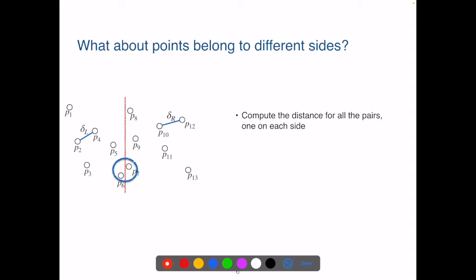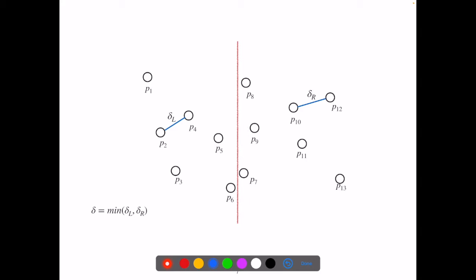If we simply compute all the distances between points on the left and points on the right, we are back with O of n-square complexity. Do we really have to compute all the distances? It seems that some pairs can be dropped.